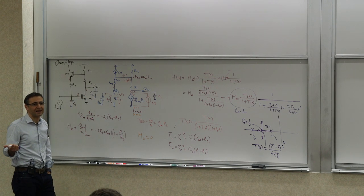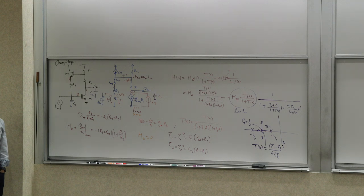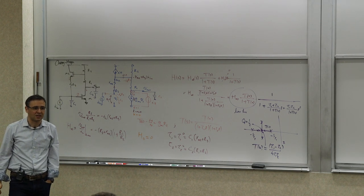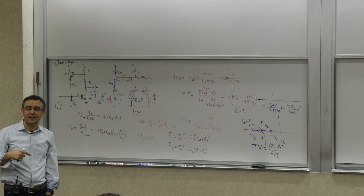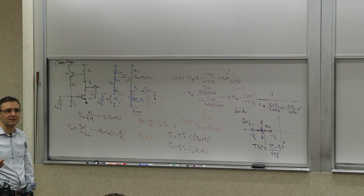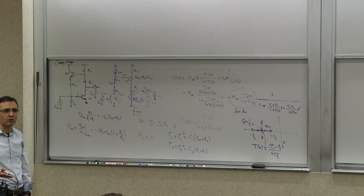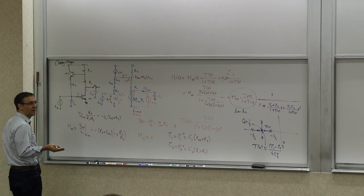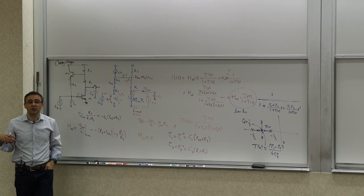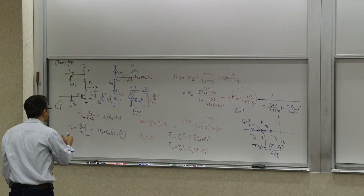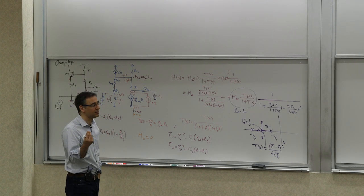The drawback of this stage is that you have active circuitry in the feedback path, which can be nonlinear. If there's nonlinearity in the feedback path, it will appear in inverse form in the closed-loop transfer function. So the transfer function is not necessarily very linear. But if linearity is not the primary concern and being able to actively control the damping ratio in a compact area is important, you can use it.